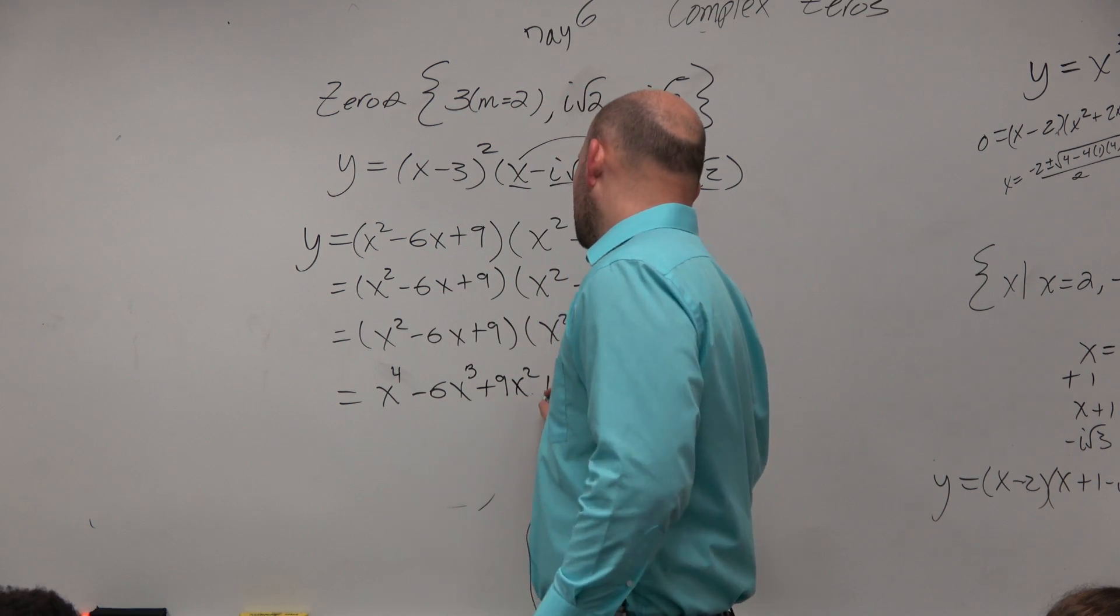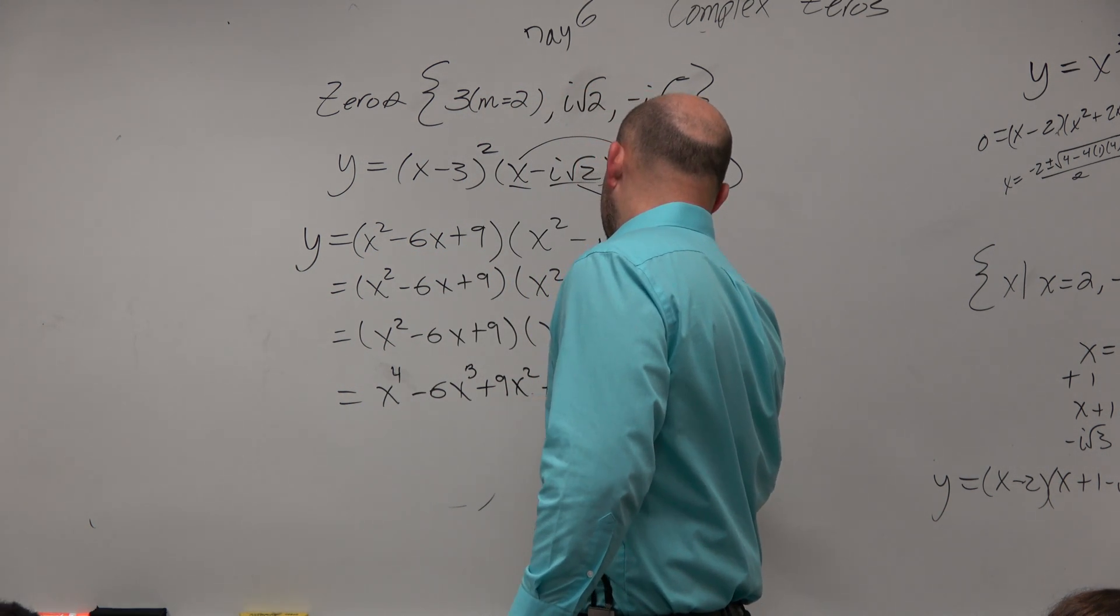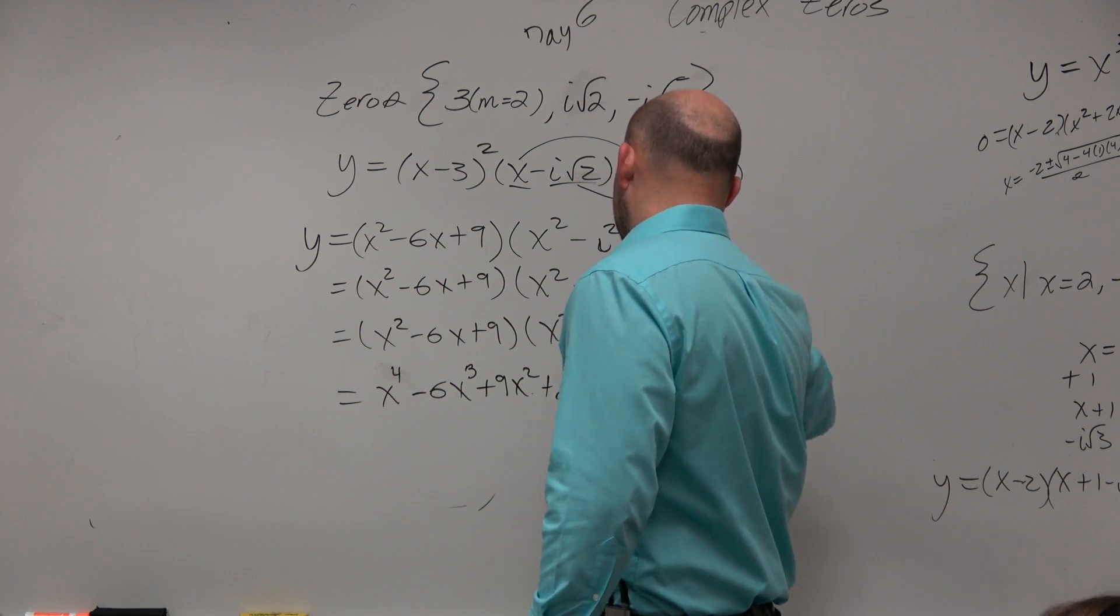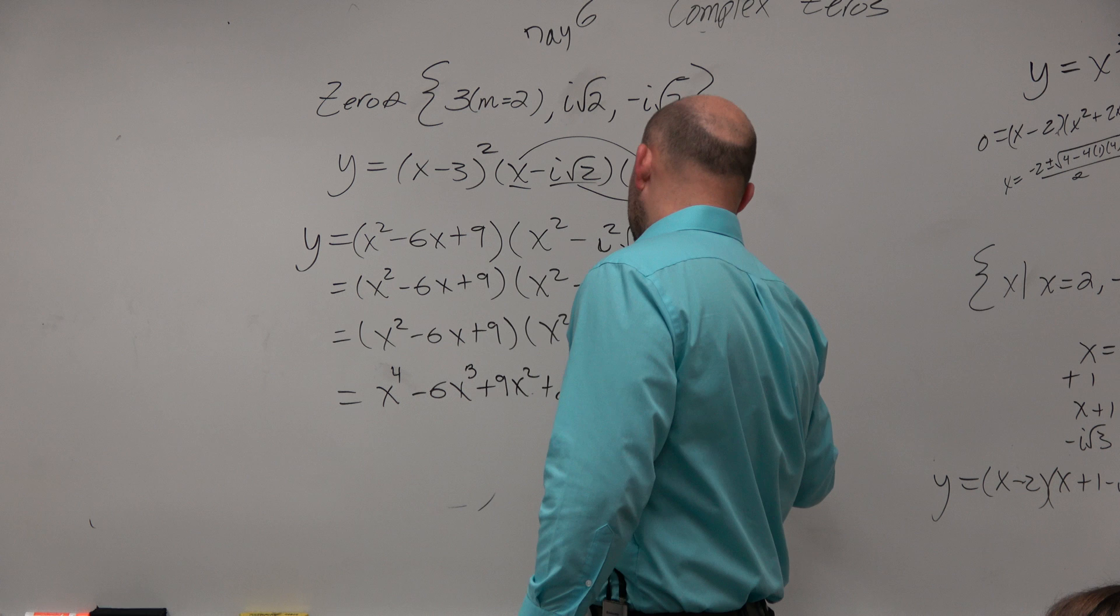Then I multiply 2 times everything plus 2x squared minus 6x plus, no, it's 12x. Jeez, oh man, plus 18.